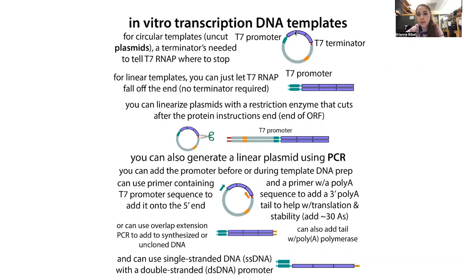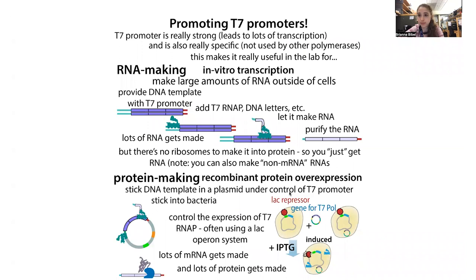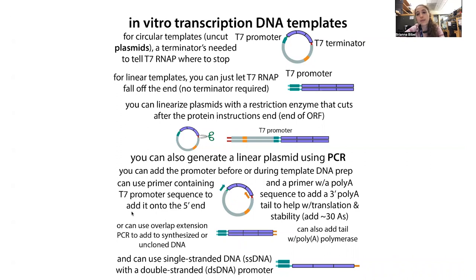The T7 promoter tells it where to start and the T7 terminator tells it where to stop. This is true for in vitro transcription as well as for protein overexpression — you want a termination sequence. The terminator folds up into a structure that causes the polymerase to stop. If you have a linear template, you don't need the terminator because the RNA polymerase will just go until it falls off. You can linearize your template using a restriction enzyme — a cut site right after your gene — to create a defined end.